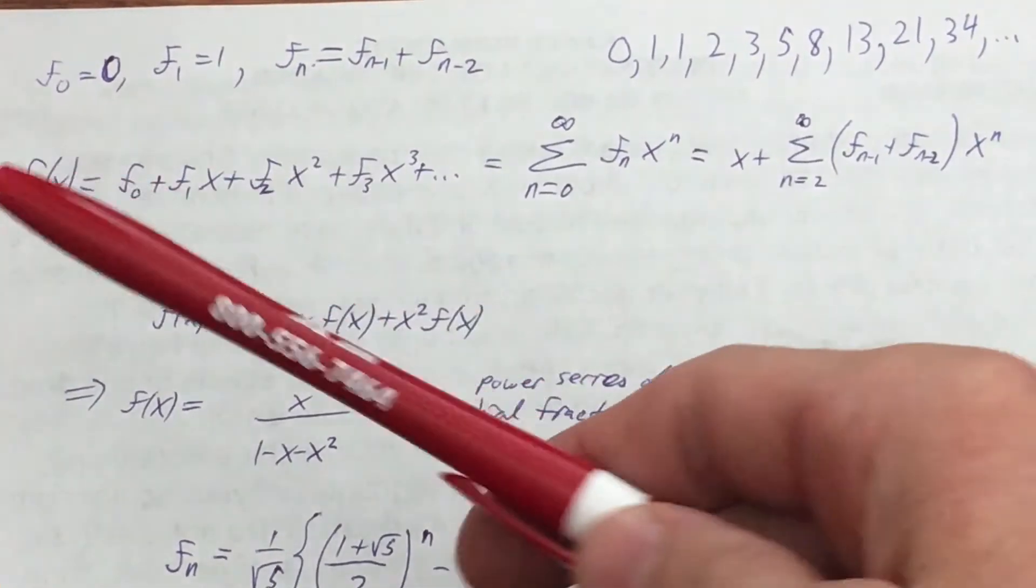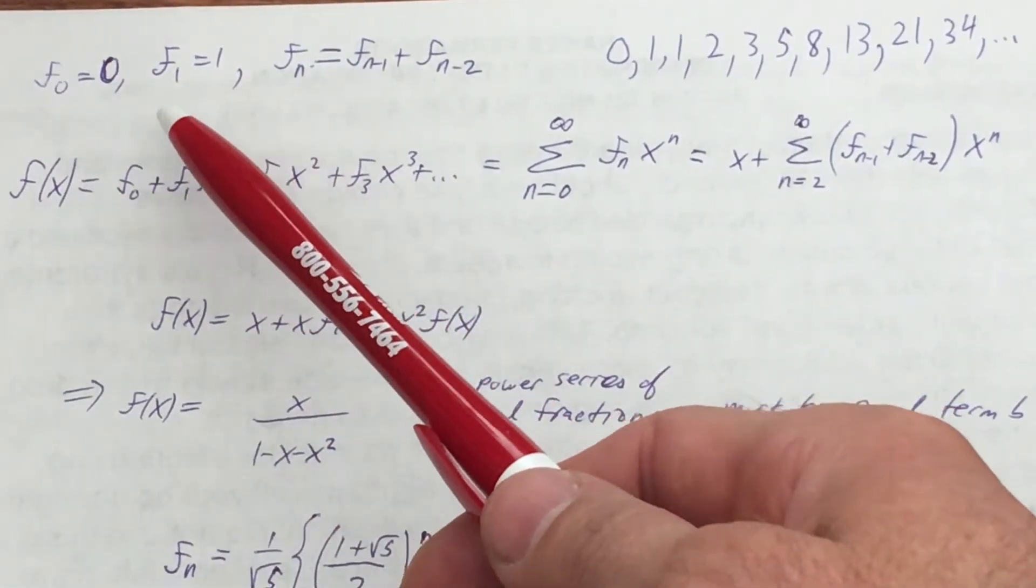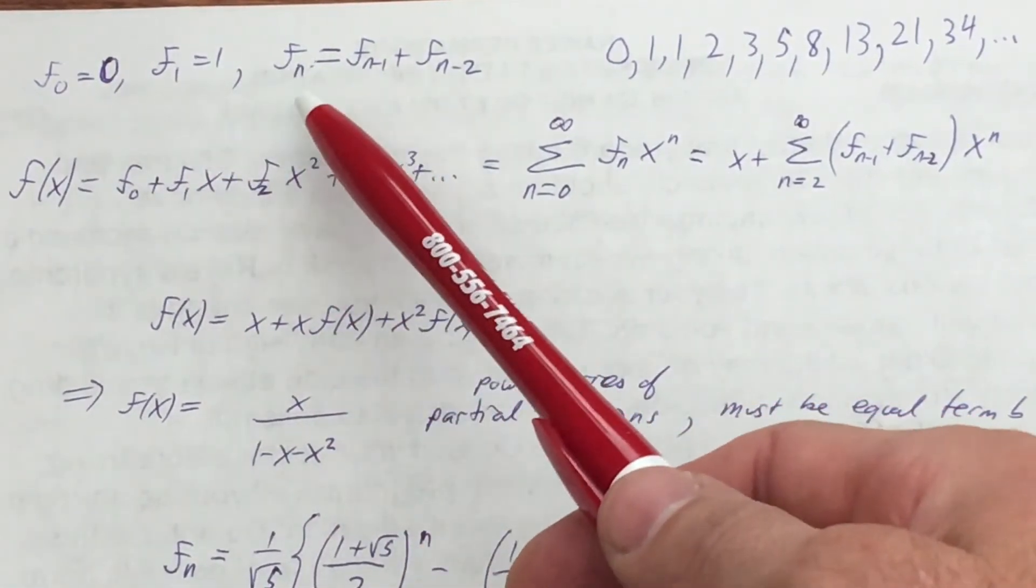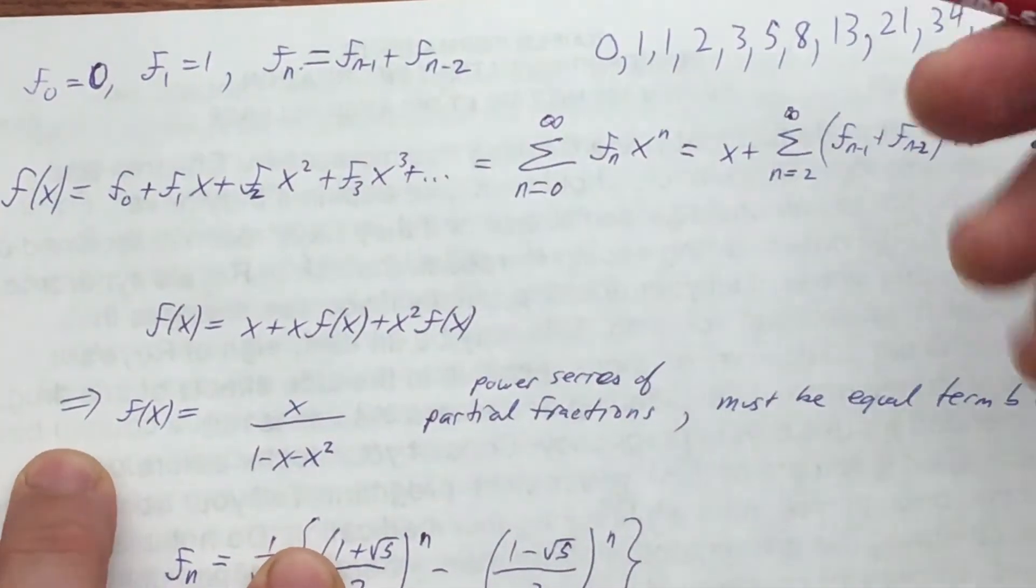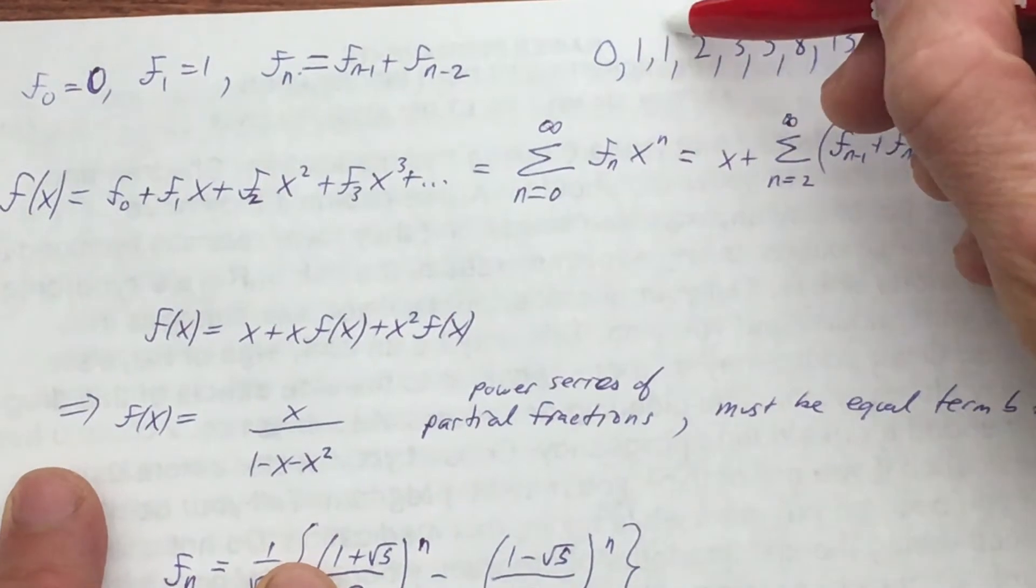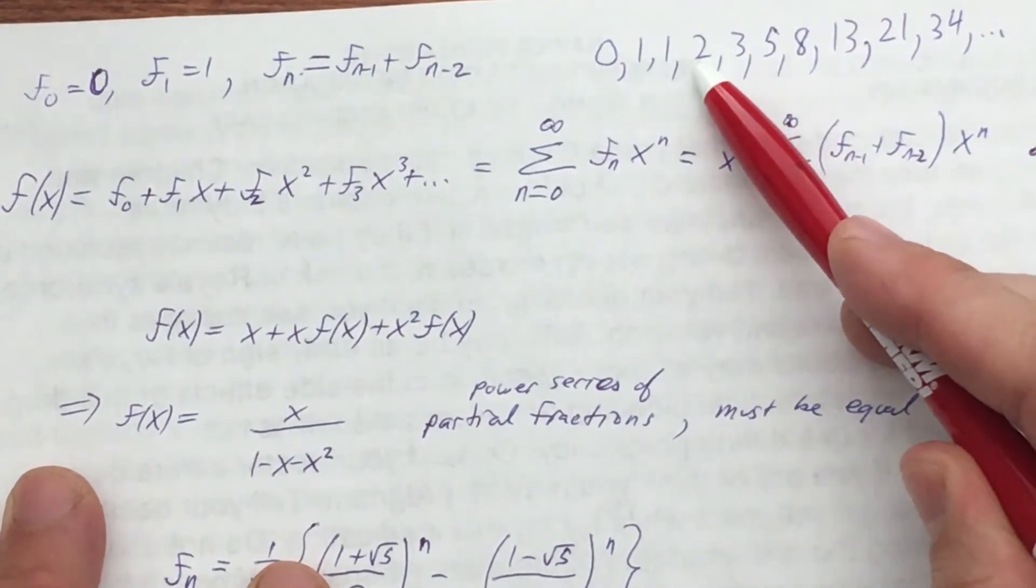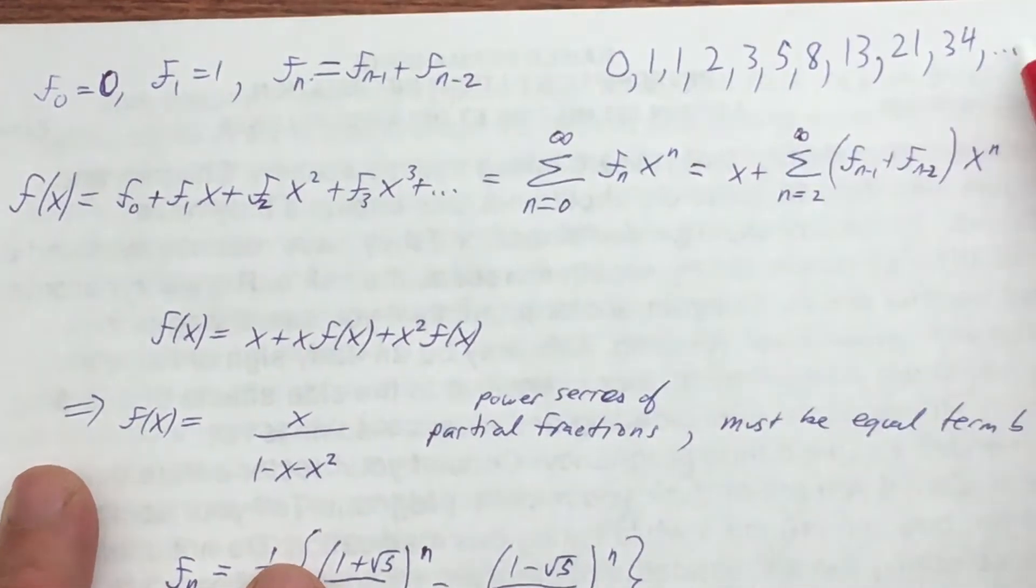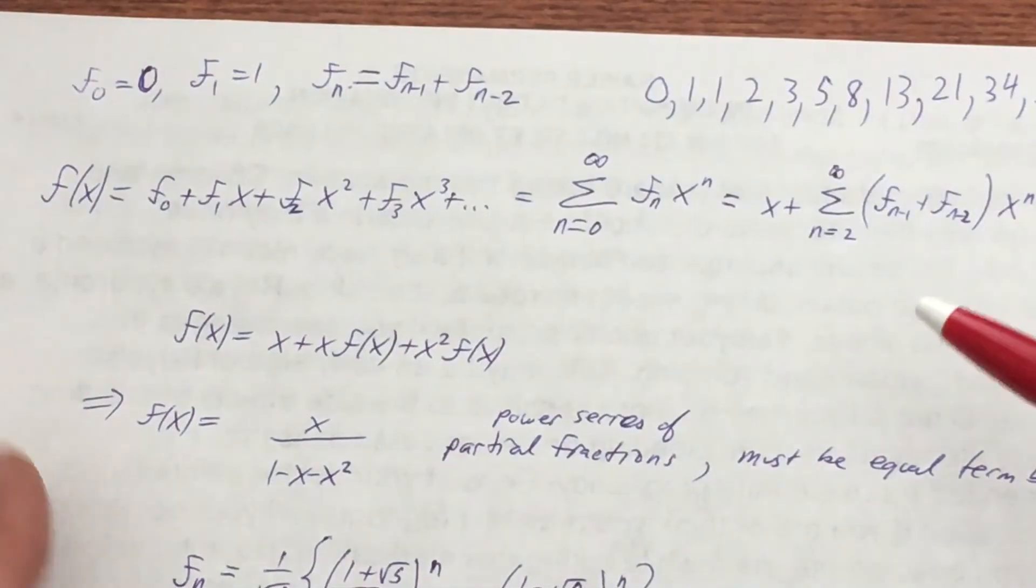So let's start with the definition of the Fibonacci sequence. Say f sub 0 is 0, f sub 1 is 1. That's how you start it. And then the way you get the next term is by adding the two previous terms. So 0 plus 1 is 1, 1 plus 1 is 2, 1 plus 2 is 3, 3 plus 5 is 8, and so on. You just add the two previous numbers to get the next number.